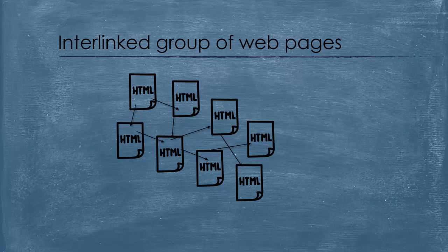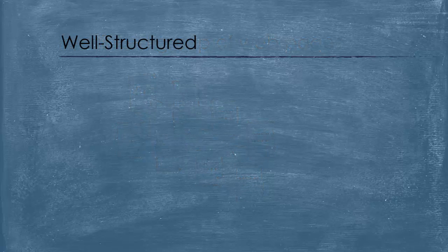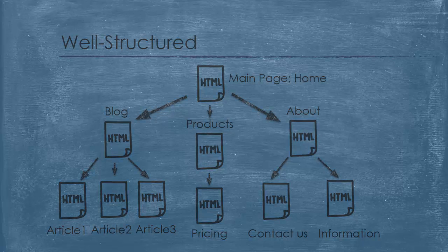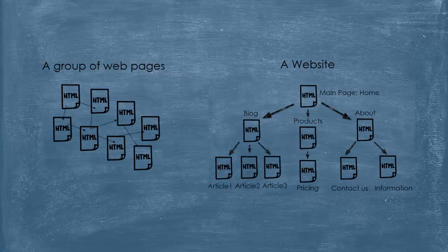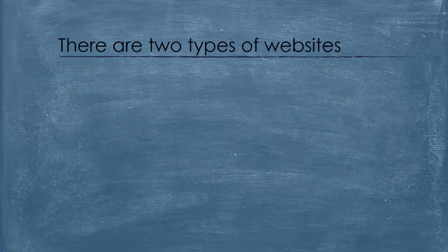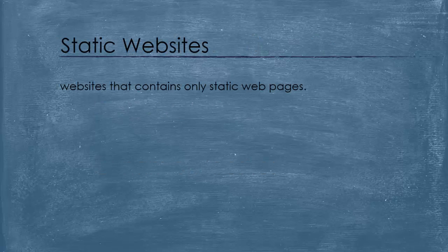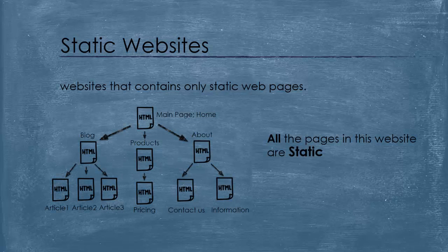However, they are not just grouped and interlinked, they are well-structured as well. This is a very simple structured website — in fact, this is just for illustration — and we can shift from page to page using hyperlinks. Now, don't confuse between a group of web pages and a website. A group of web pages are not structured, not necessarily interlinked and grouped in one place. We can distinguish between two types of websites: static and dynamic. Static websites are websites that contain only static web pages. For example, our website is a static one, and all its web pages are static.